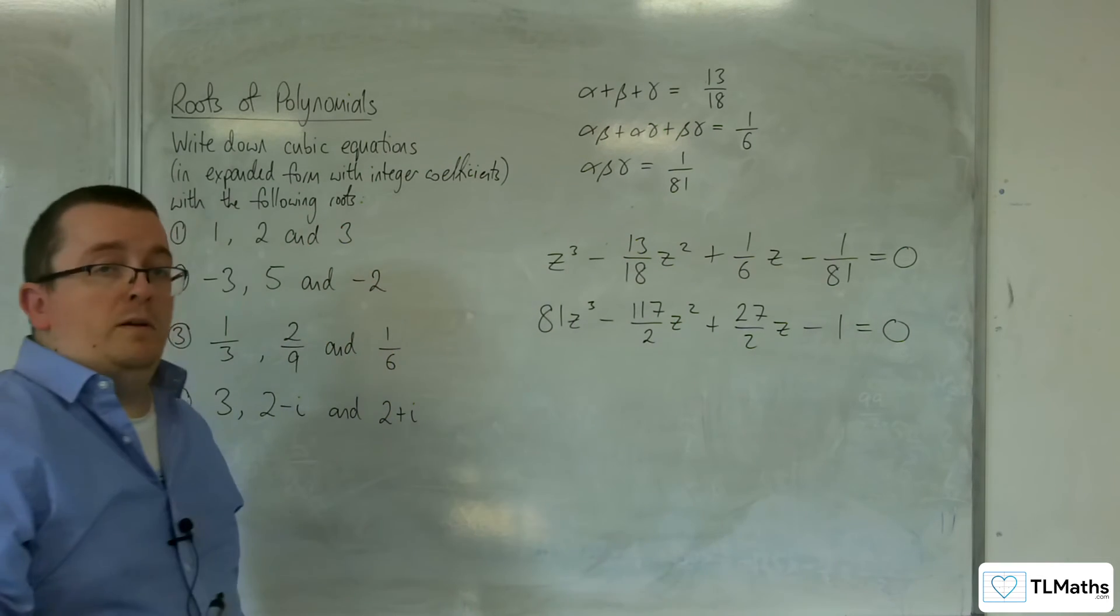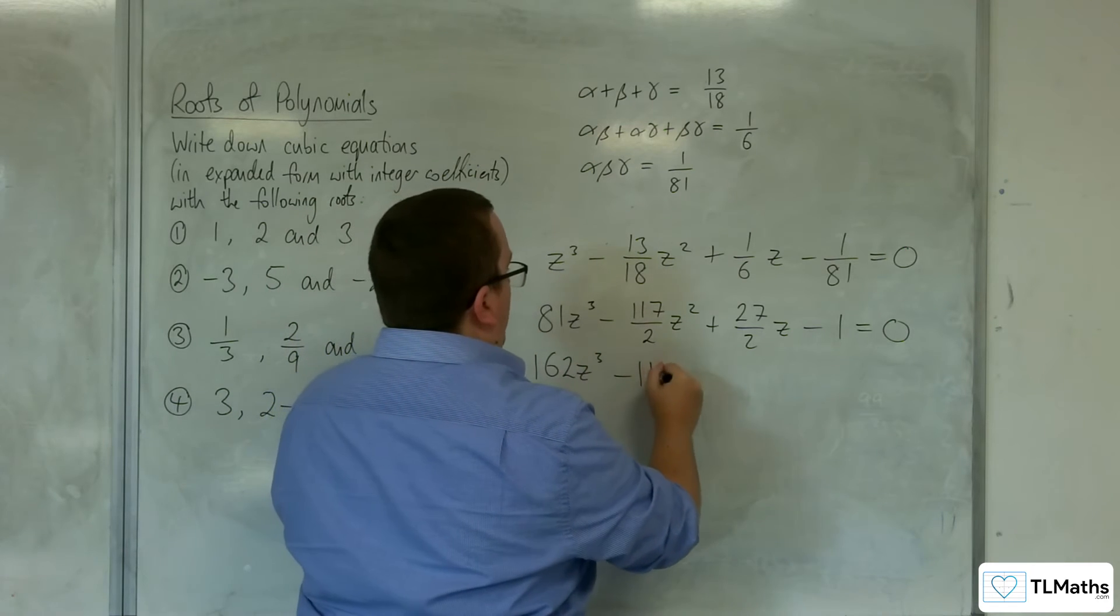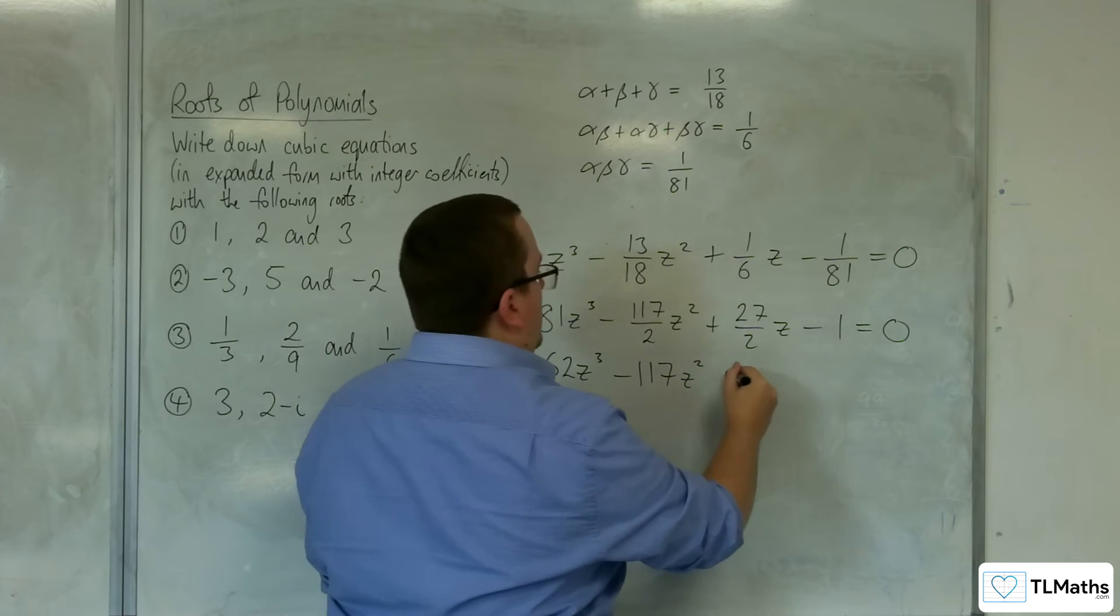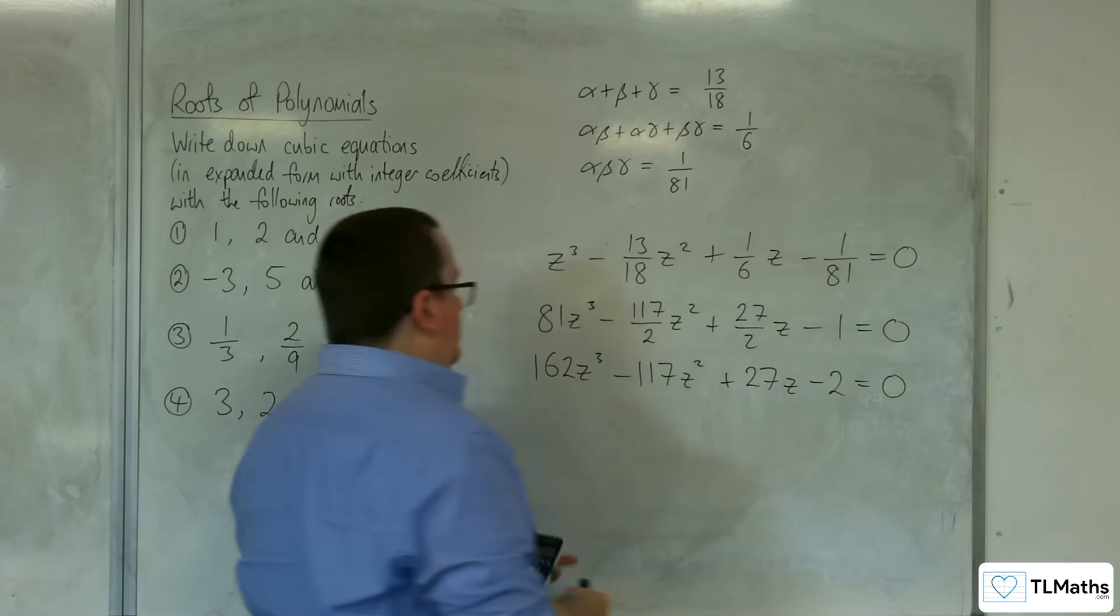So now we just need to multiply through by 2. So, 162 z cubed, take away 117 z squared, plus 27 z, take away 2, equals 0.